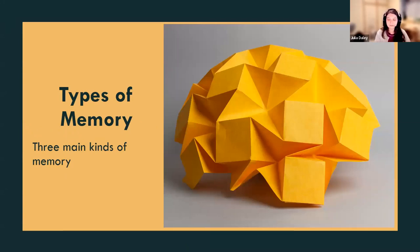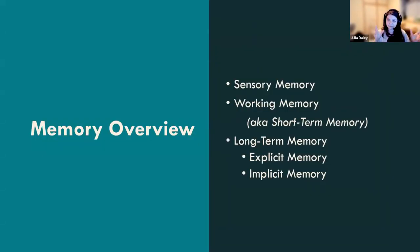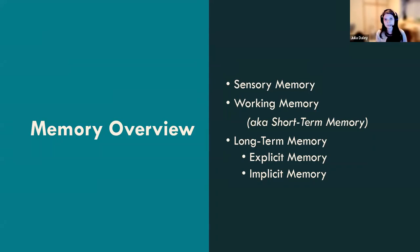We're going to talk about the types of memory, and there are three main types of memory according to most theories of psychology. First you have sensory memory. There is working memory, which is also known as short-term memory — it might be a term you're more familiar with. And then we have long-term memory, which is another term many of you have probably heard, and is divided into two subtypes: explicit and implicit.